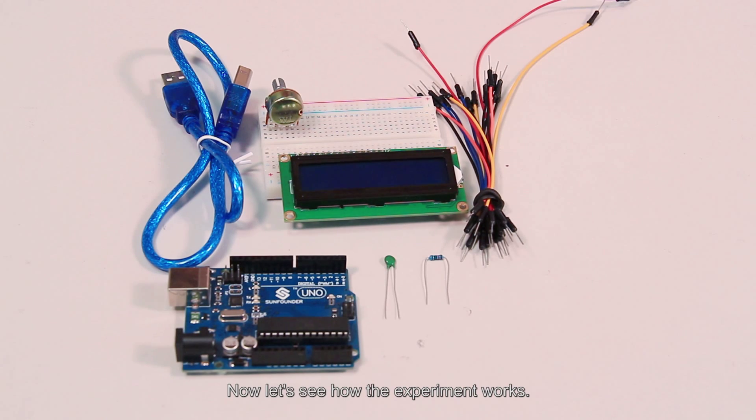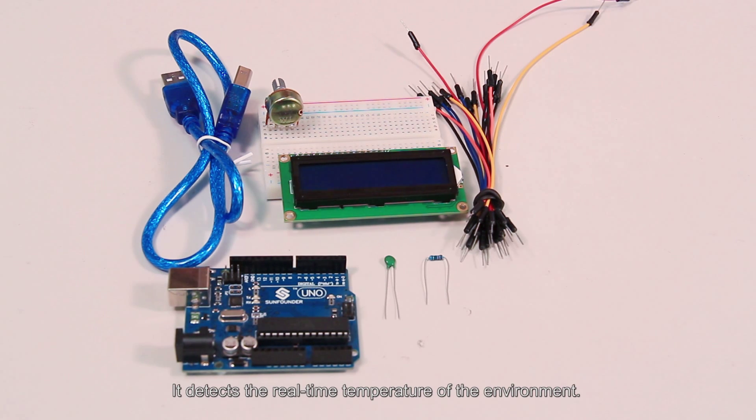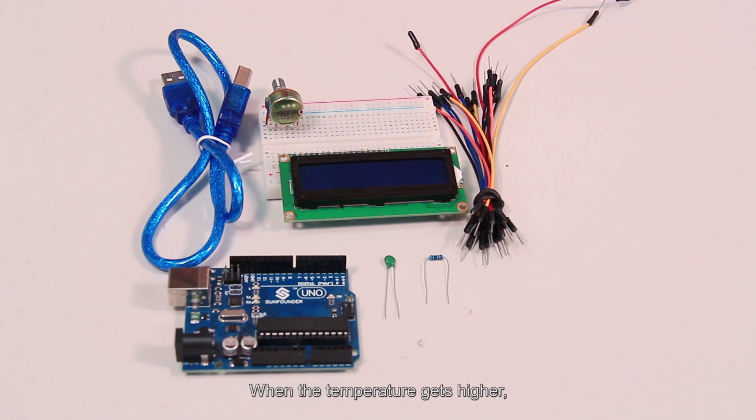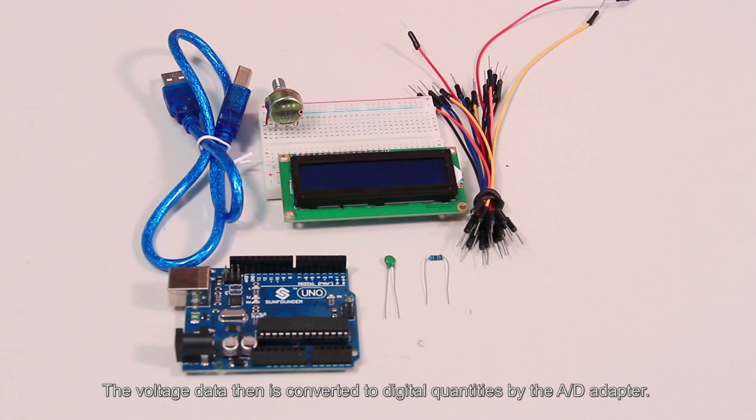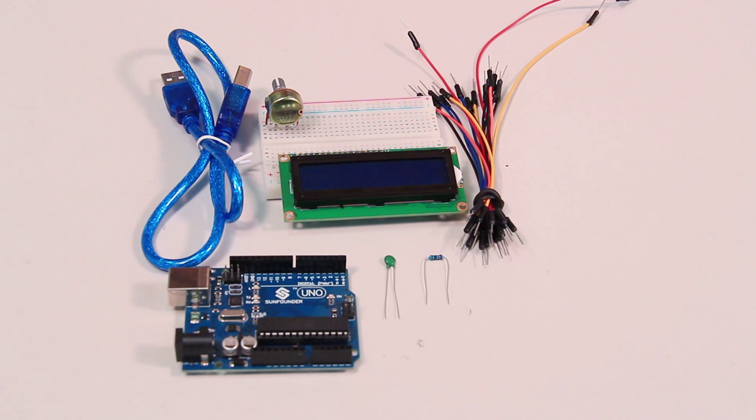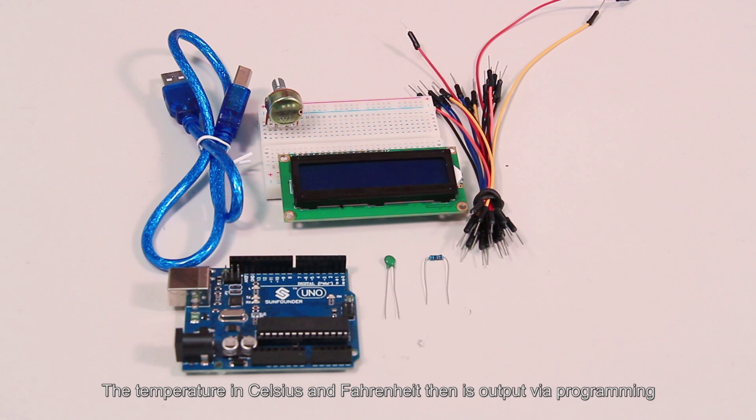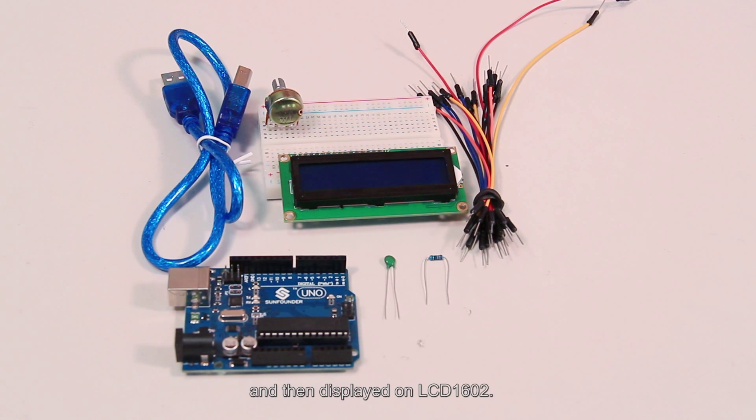Now let's see how the experiment works. The principle is that the resistance of the NTC thermistor changes with the temperature difference in the outer environment. It detects the real-time temperature of the environment. When the temperature gets higher, the resistance of the thermistor decreases and the voltage of pin A0 increases accordingly. The voltage data then is converted to a digital quantities by the AD adapter. The temperature in Celsius and Fahrenheit then is output via programming and then displayed on LCD1602.